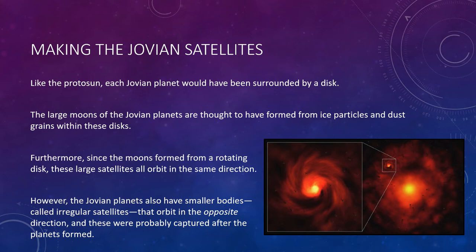This model also explains most of the large moons of the Jovian planets. The same processes of heating, spinning, and flattening that made the solar nebula disk also affected the gases drawn by the gravity of the young Jovian planets. Each Jovian planet came to be surrounded by its own disk of gas spinning in the same direction as the planet rotated, and moons accreting from ice-rich planetesimals within these disks ended up with nearly circular orbits going in the same direction as their planet's rotation.